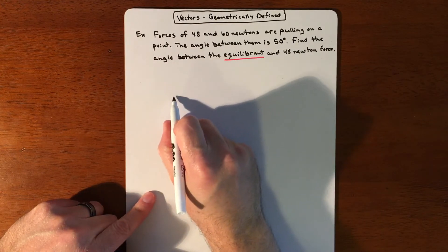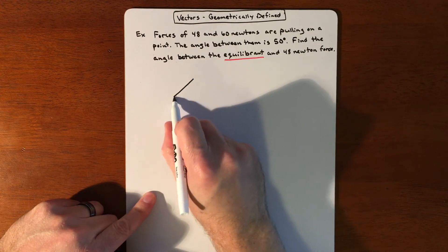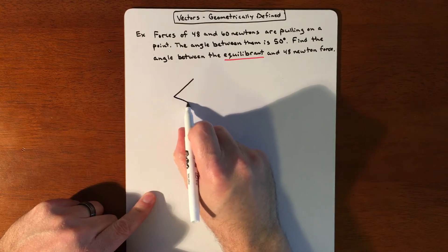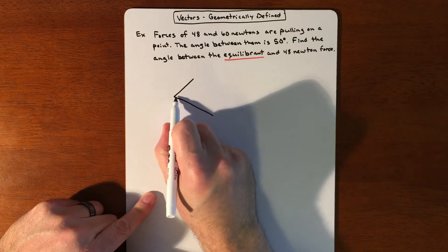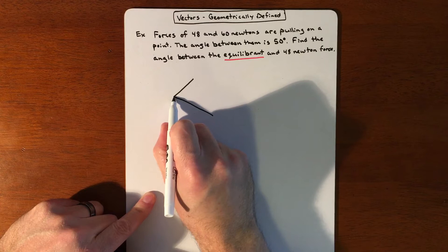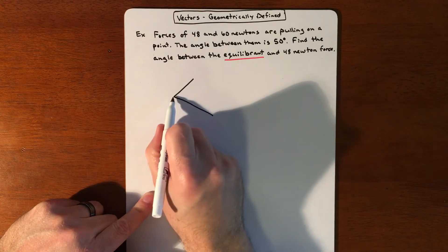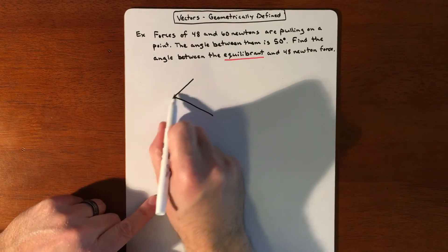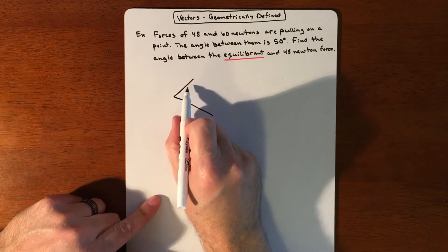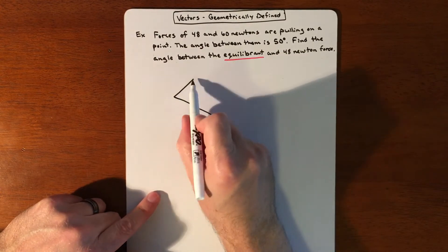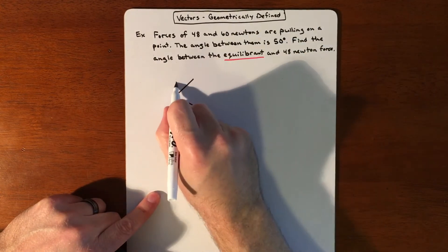That means that we have a pull in this direction and a pull in this direction, and between the two of them, what we're trying to do is we're trying to negate this pull. So if you're walking a dog and one dog was going in this direction for a certain pull, we'll call it 48.